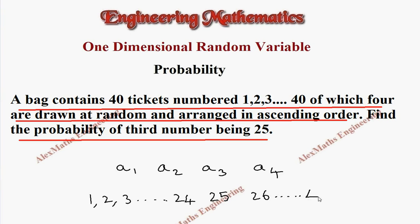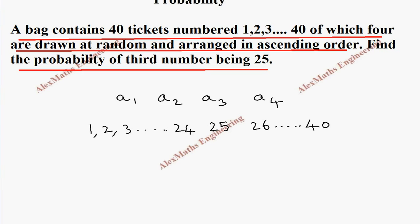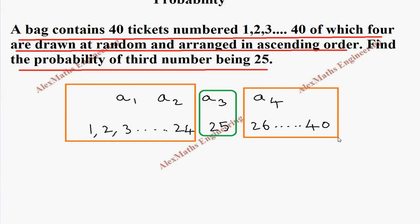Since we are looking for the third number 25, the other two numbers before that - that is a1 and a2 - has to come from 1 to 24. In the same way, the last number should come from 26 to 40.